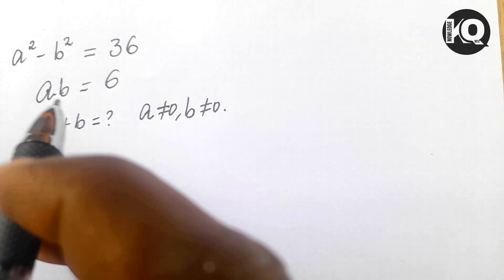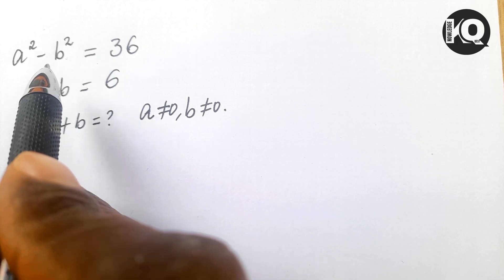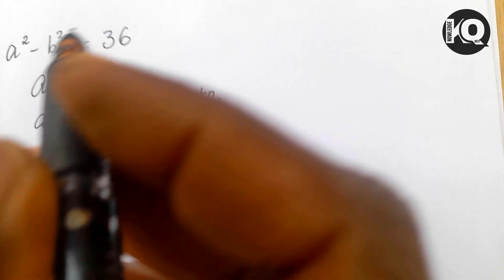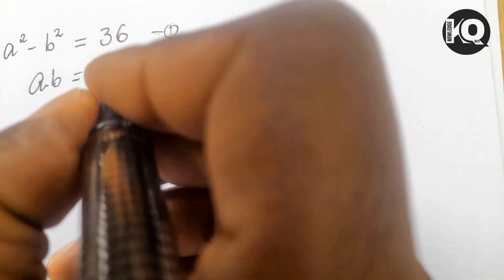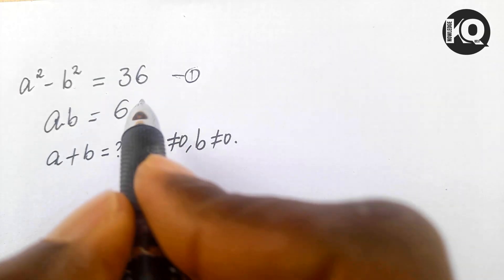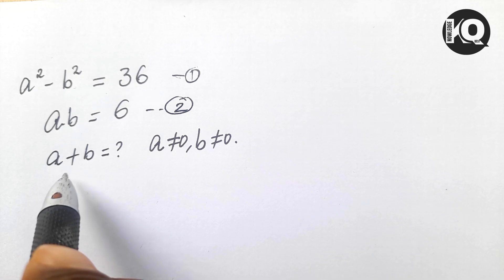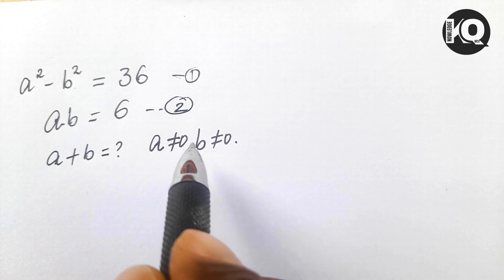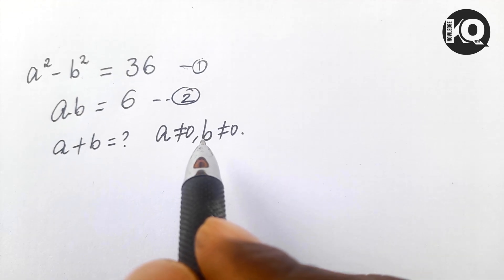Hello, welcome. We will solve this mathematical problem: a² - b² = 36, which is equation 1, and a times b = 6, which is equation 2. Find the value of a + b, where a is different from 0 and b is different from 0.